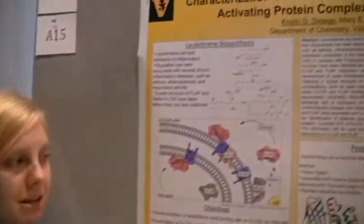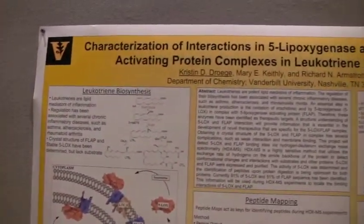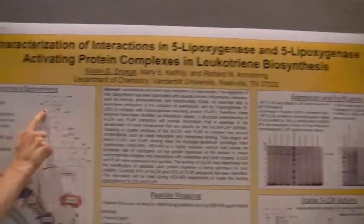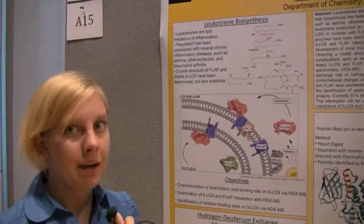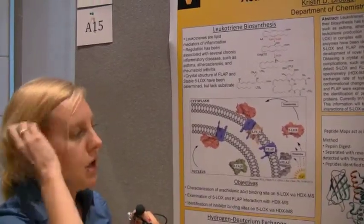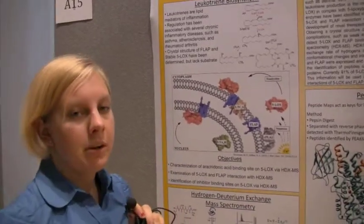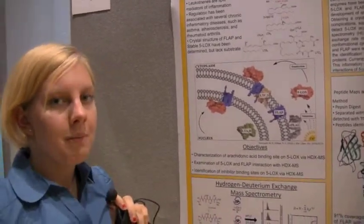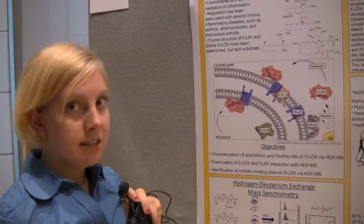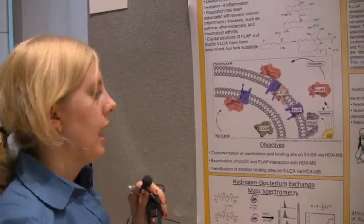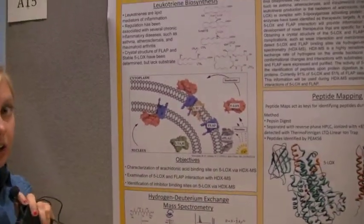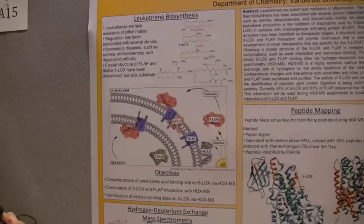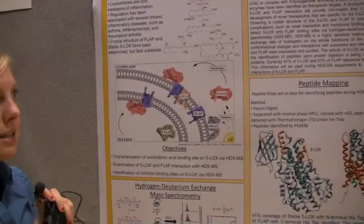My project is focusing on the protein 5-lipoxygenase and 5-lipoxygenase-activating protein. Basically, they associate to oxidize arachidonic acid, which is the first step in leukotriene biosynthesis. Both these proteins have been crystallized, but there isn't much information about how substrate binds or how they exactly associate in order to oxidize arachidonic acid. We're proposing using hydrogen deuterium exchange as an alternative to crystallization in order to see the interaction and see how arachidonic acid binds to these proteins.